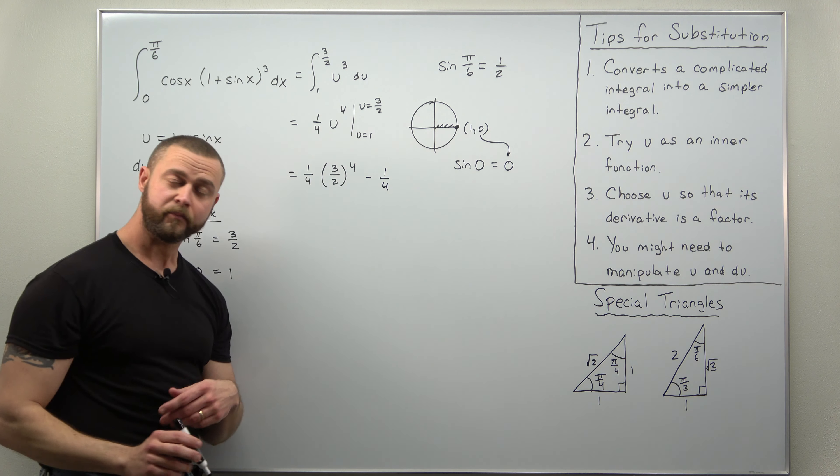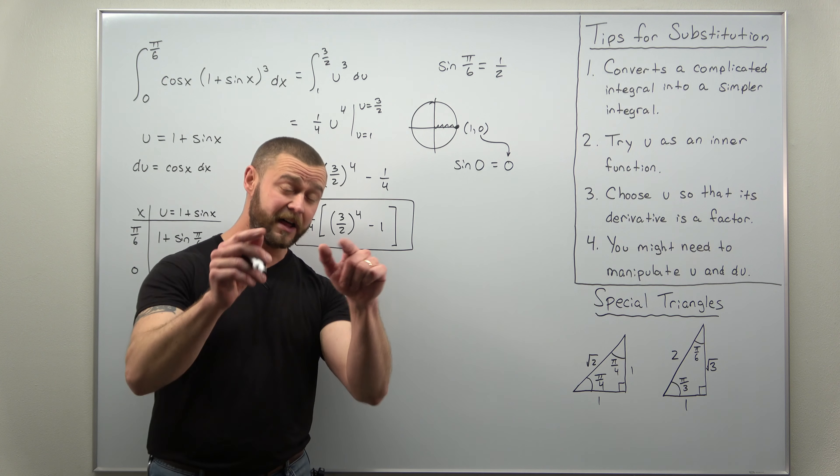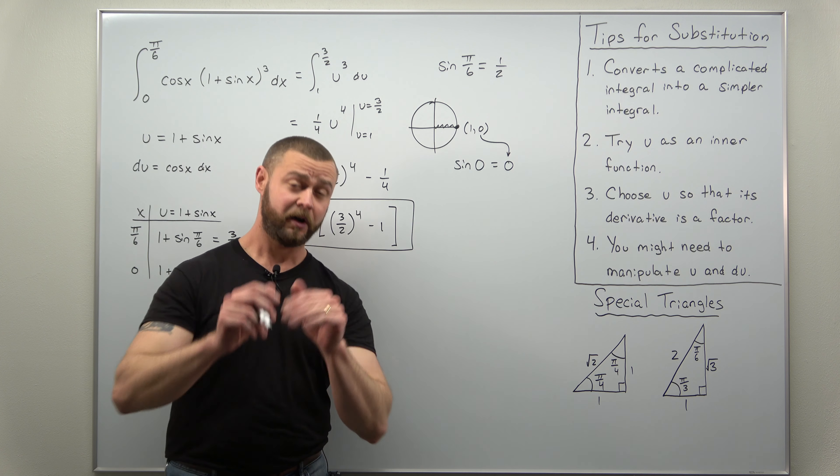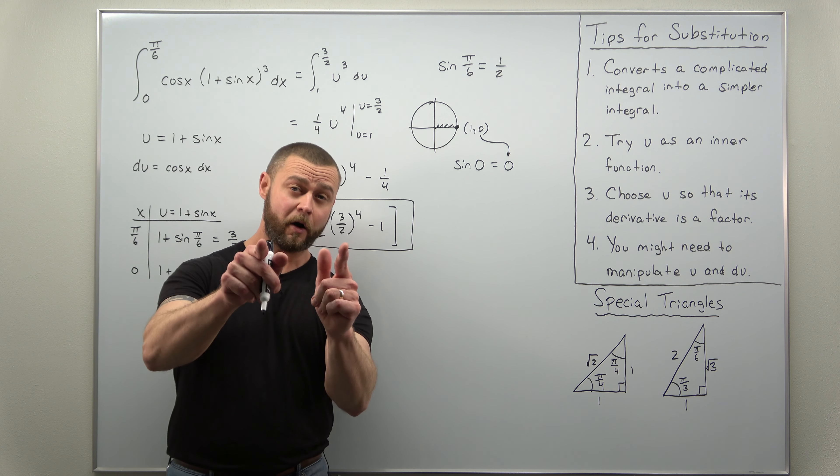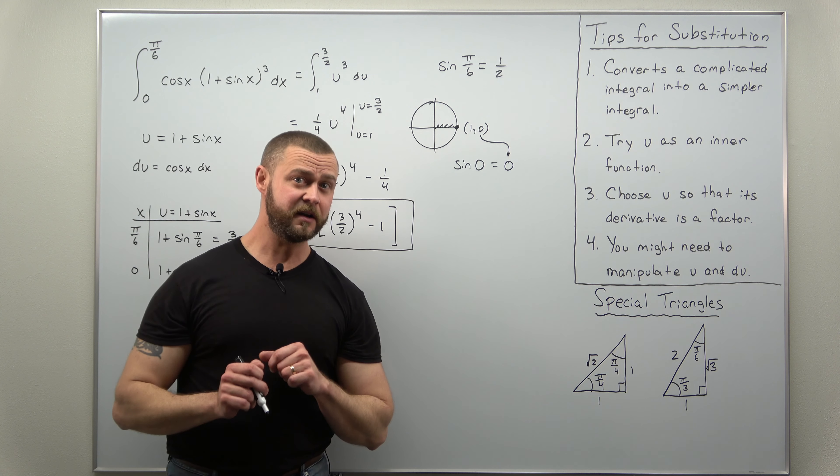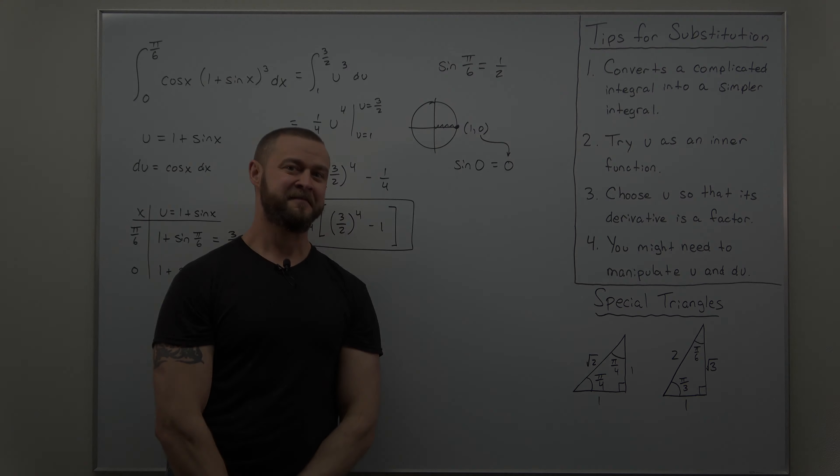And write your answer as one fourth times three over two to the fourth power minus one. And that comes out to some number - this is the exact value which myself and a lot of other calculus professors are looking for. Hope you enjoyed the video. If you did, like and subscribe.